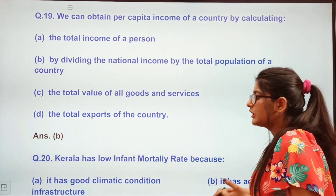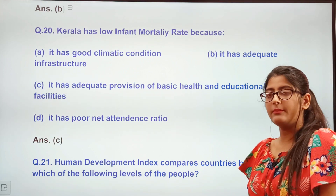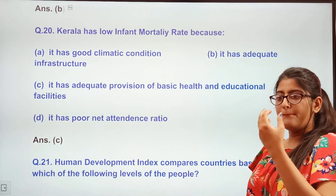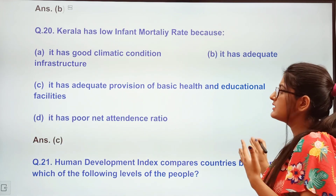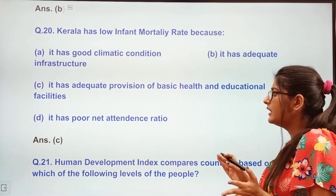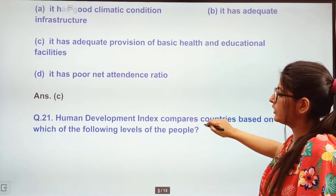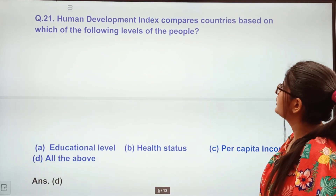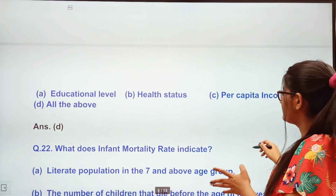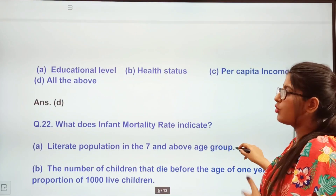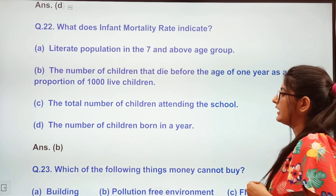The correct answer for per capita income is: divide national income by population. Next question: Kerala has a low infant mortality rate because — it has good climatic conditions, it has adequate facilities, it has adequate provision of basic health and education facilities, or it has poor net attendance ratio? The answer is option C — healthcare facilities are very good. Human Development Index compares countries based on educational level, health status, and per capita income — all of the above.